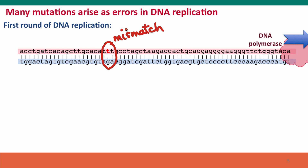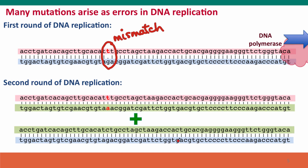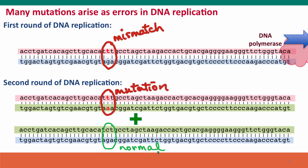However, a mismatch is not a mutation by the definition we just went over. When this DNA is replicated again at the next cell division, each of its two strands serves as a template for the synthesis of a new strand — I've colored the new strands green. One of these double-stranded DNAs contains a changed base pair: this is a mutation. The other daughter DNA molecule contains normal sequence DNA.